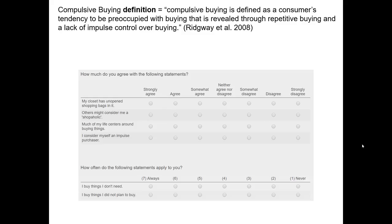Let's take a look at another alternative compulsive buying scale. This idea of competing scales is pretty common in marketing research — subjective properties are tricky to measure, so lots of different people have tried to tackle measuring important subjective properties. First, look at Ridgeway's definition of compulsive buying: a consumer's tendency to be preoccupied with buying, revealed through repetitive buying and a lack of impulse control over buying. Notice that there's nothing about stressful events triggering compulsive buying in this particular definition.